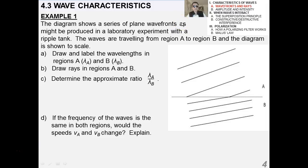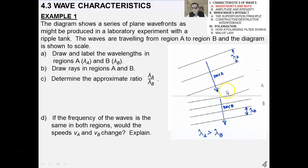All right. So, here's a first example, a past paper question. Go ahead and pause the video and spend a little time working through this one. Okay, so this diagram shows a series of plane wavefronts, as might be produced in a laboratory experiment with a ripple tank. The waves are traveling from region A to region B, and the diagram is drawn to scale. I want you to draw and label the wavelengths in regions A and B. Well, that's pretty easy, right? Wavelengths here, wavelength there.